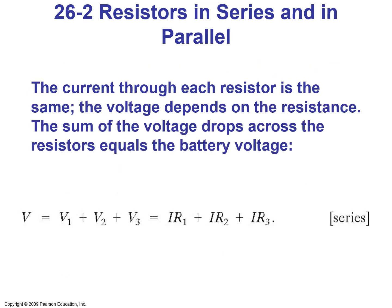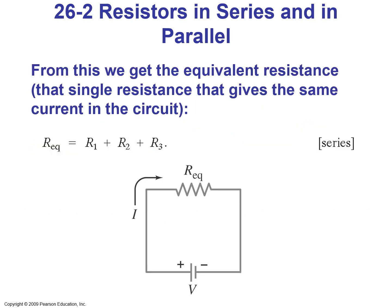In a series configuration, the current through each resistor is the same. The voltage depends on the resistance. The sum of the voltage drops across the resistors equals the battery voltage. So the voltage equals V1 plus V2 plus V3, which equals I times R1 plus I times R2 plus I times R3 — a common current passing through each resistor. From this we get the equivalent resistance: for a series configuration, R_eq equals R1 plus R2 plus R3.